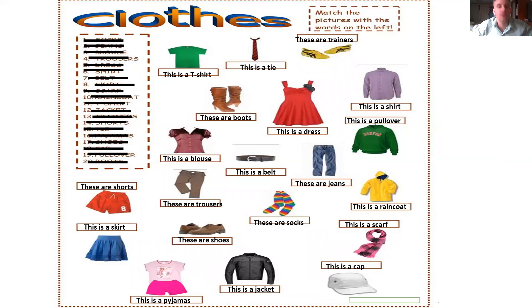This is a tie. These are trainers. These are boots. This is a dress. This is a shirt. This is a pullover. This is a blouse. This is a belt. These are jeans. This is a raincoat. These are trousers.